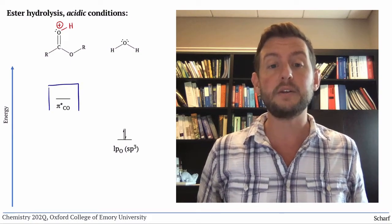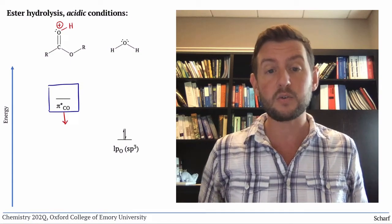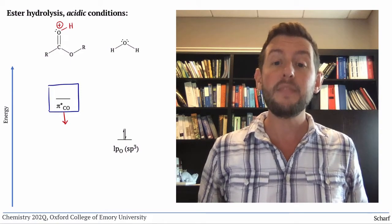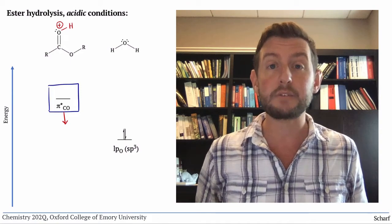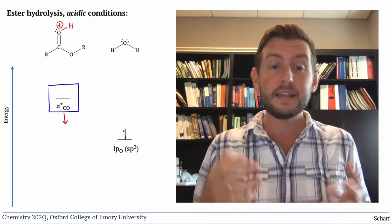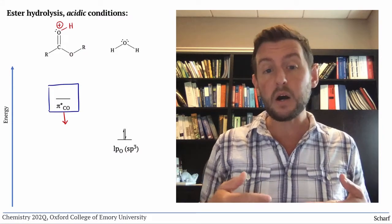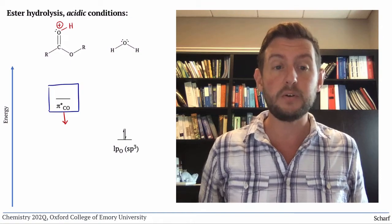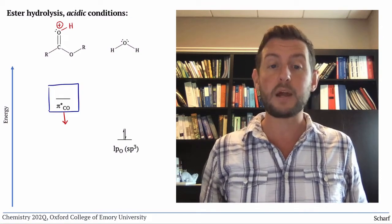So by protonating the carbonyl group, we lower the energy of its CO pi star orbital, its LUMO, thereby making it much more electrophilic. Now the nucleophilic water doesn't have to work so hard to reach the LUMO, and the reaction can proceed more rapidly.